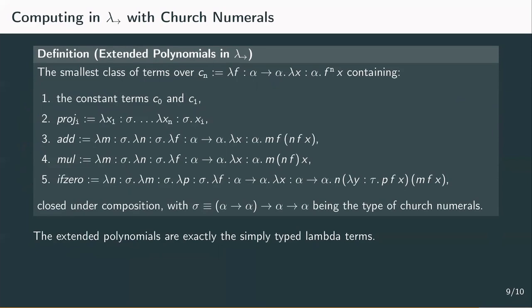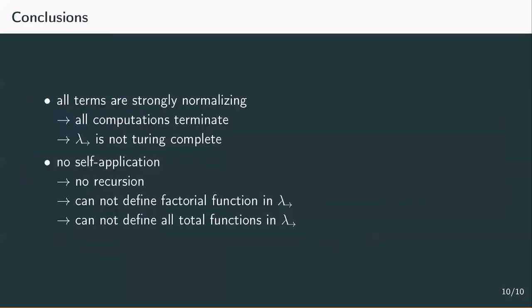The consequences of introducing simple types are quite noticeable. For one, all terms are now strongly normalizing, which means that every computation expressible in the simply-typed lambda calculus terminates, and this is actually a major improvement. But this obviously means that the system can't be Turing complete, we can only compute the extended polynomials.